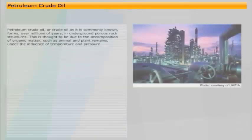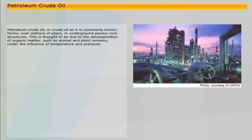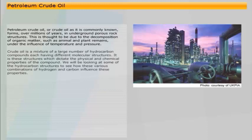Petroleum crude oil, or crude oil as it is commonly known, forms over millions of years in underground porous rock structures. This is thought to be due to the decomposition of organic matter, such as animal and plant remains, under the influence of temperature and pressure. Crude oil is a mixture of a large number of hydrocarbon compounds, each having different molecular structures. It is these structures which dictate the physical and chemical properties of the compound.